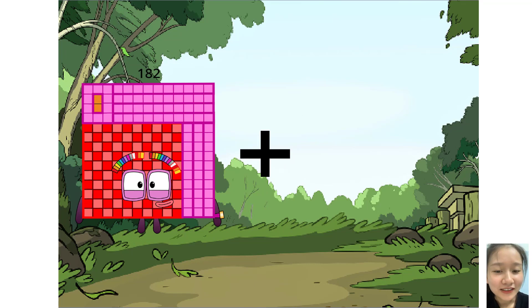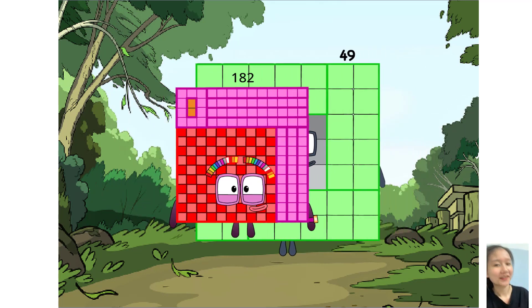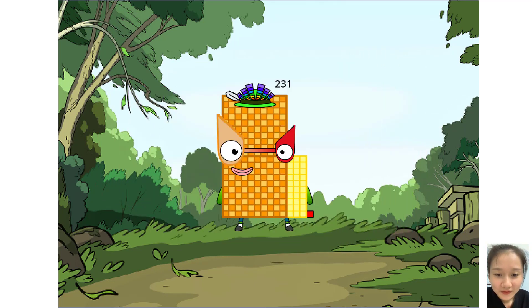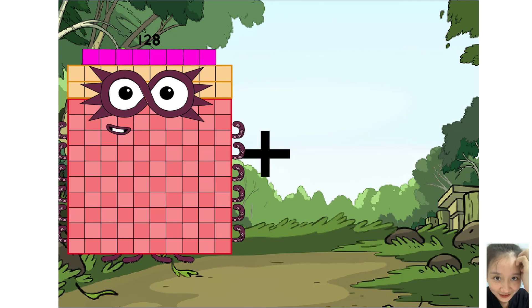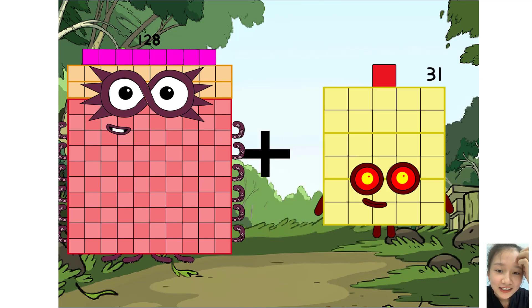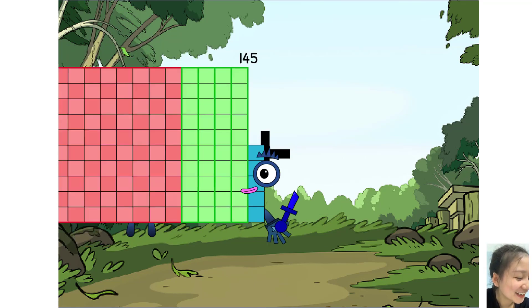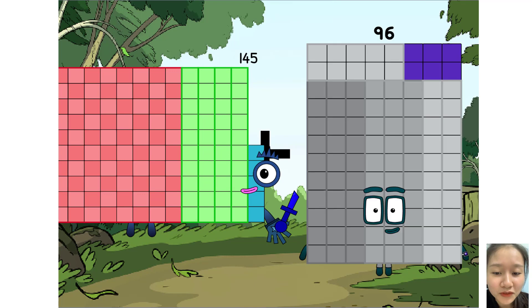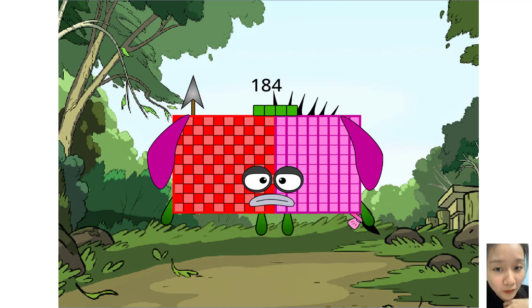182 plus 49 equals 231. Next question. 128 plus 31 equals 159. 145 plus 39 equals 184.